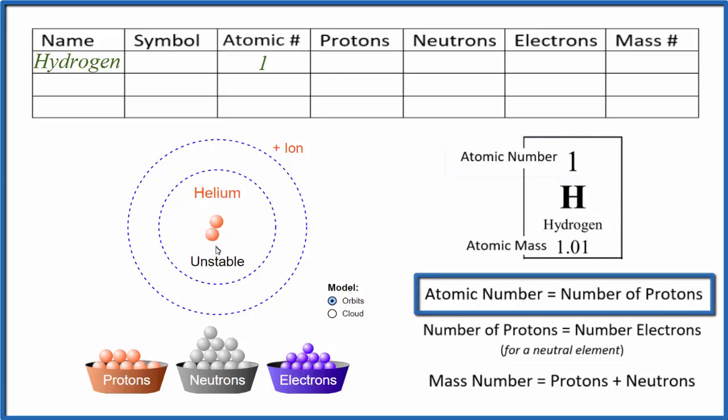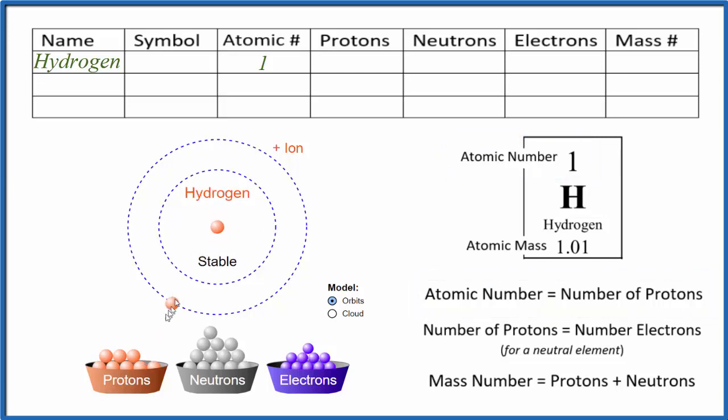If we put two protons, it wouldn't be hydrogen anymore. So hydrogen always has one proton. Hydrogen on the periodic table is a neutral element. Its number of electrons and protons are the same. It doesn't have a charge. Right now we have a positive charge. So if we add one electron, now this is neutral.